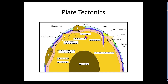Plate tectonics: we have a continent here, a continent there, ocean crust, a spreading center, a trench, a volcanic arc, and a back arc basin. This is how our planet works — we have continents that float on top of oceanic or continental crust, floating on top of rigid mantle. The mantle is hard; it supports the weight of the crust and the continents.